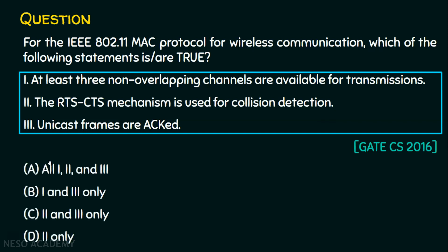Let's see the options now. Option A: all of one, two, and three are true. Option B: one and three only. Option C: two and three only. Option D: two only.